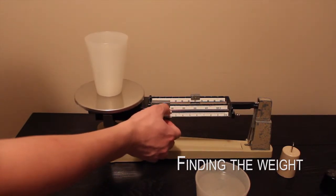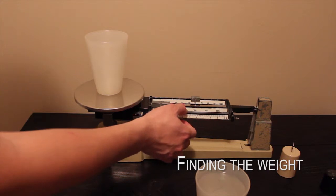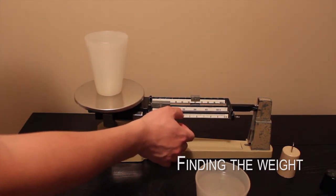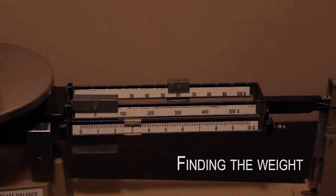Then, adjust the last beam's scale's 0.10 gram weight until the balance pointer reaches the middle point. The scale is now balanced, and is ready to be read. This cup of water weighs 63 grams.